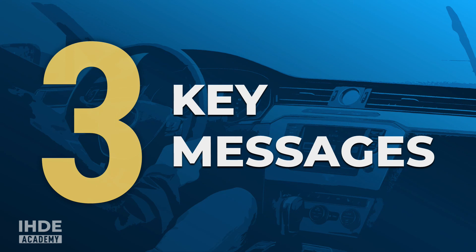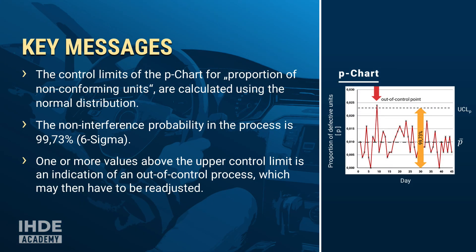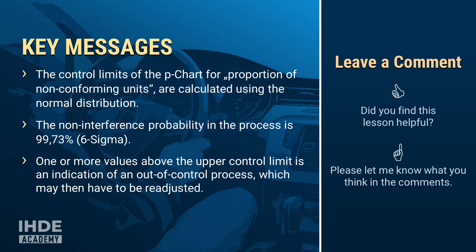Well, that was a lot of new information. Therefore, I would like to conclude by repeating the three most important key messages. The control limits of the p-chart for proportion of non-conforming units are calculated using the normal distribution. The non-interference probability in the process is 99.73%, which is equal to a six sigma range. One or more values above the upper control limit is an indication of an out-of-control process which may then have to be readjusted. If you found this lesson helpful, please let me know and leave a comment. Thank you. Take care and see you next time. Bye.